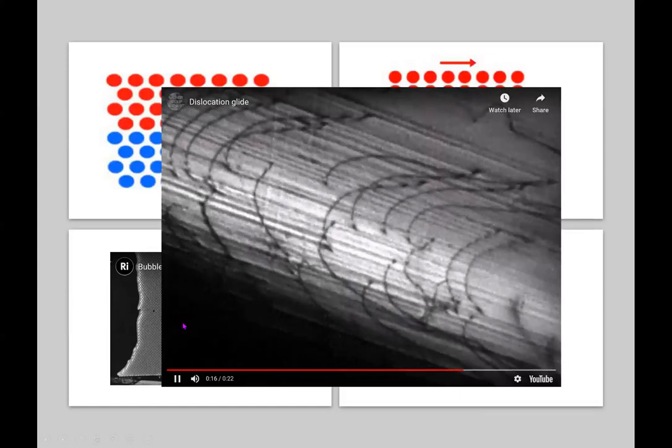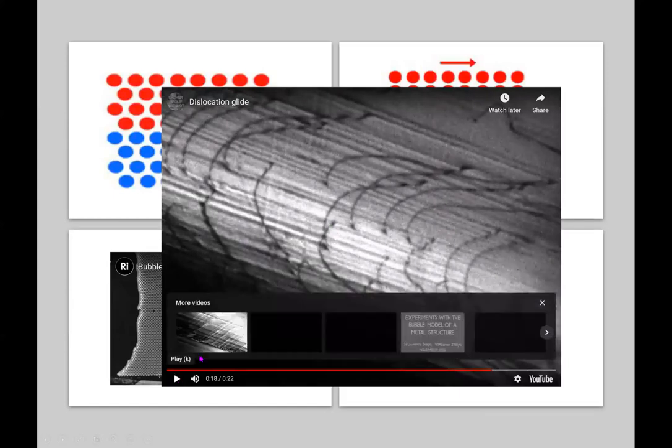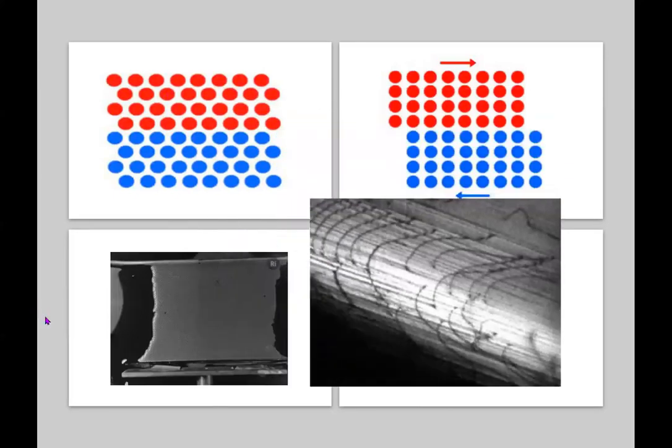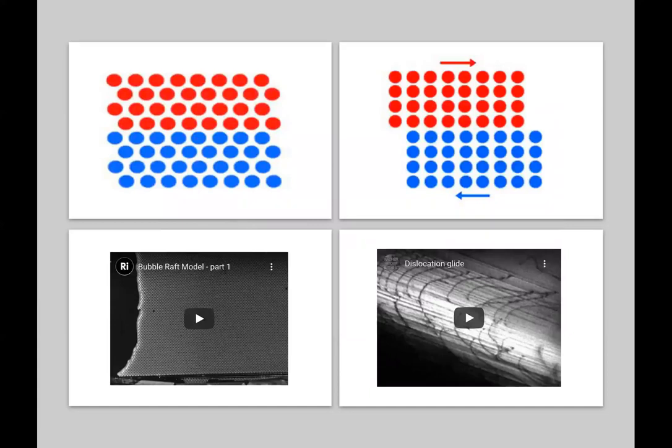And so this bending that you see in a macro scale is actually done by the displacement of large numbers, huge numbers of dislocations. In your textbook, we'll talk about the numbers of dislocations that you'll have in a solid, and we'll talk about a little bit more in chapter to come. But huge numbers of dislocations that are moving the material at an atomic scale, and that results in the overall deformation you see at a macro scale.